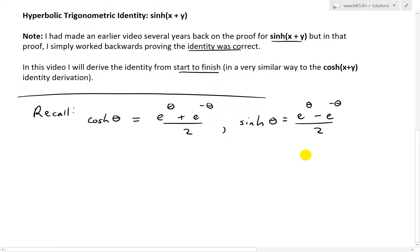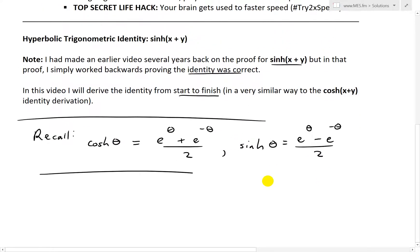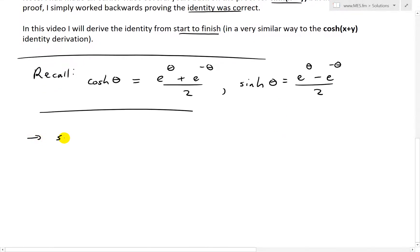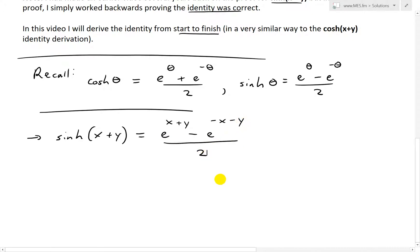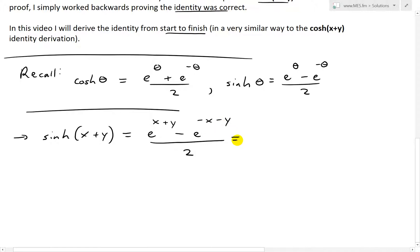Recalling these definitions, we can substitute x plus y into sinh. So sinh(x+y) by definition equals e to the (x+y) minus e to the negative (x+y), all divided by 2. Expanding using exponent laws, this becomes e to the x times e to the y, minus e to the negative x times e to the negative y, all over 2.